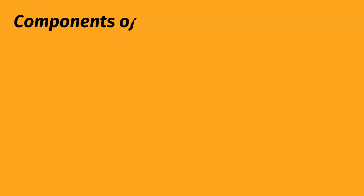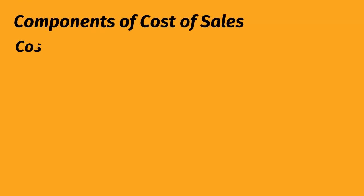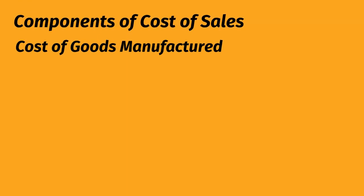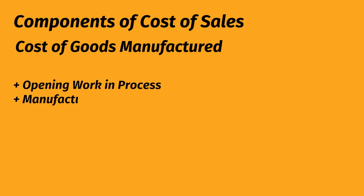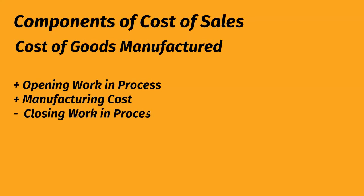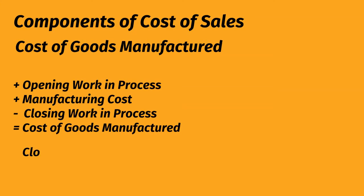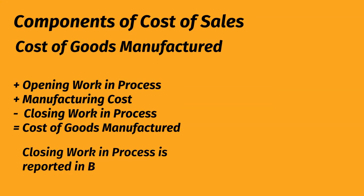Components of cost of sales: Cost of Goods Manufactured. Add opening work in process, add manufacturing cost, less closing work in process — equals cost of goods manufactured. Closing work in process is reported in balance sheet current assets.